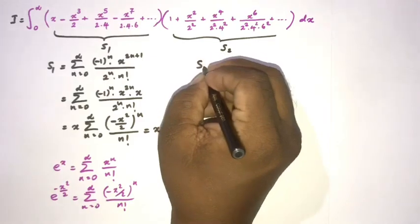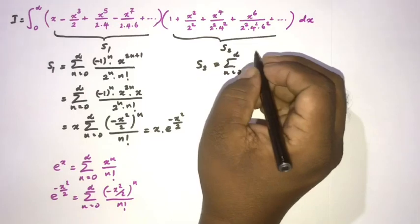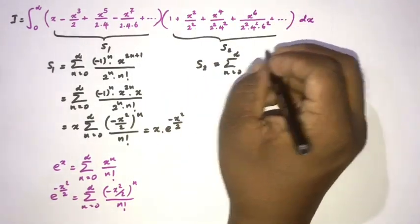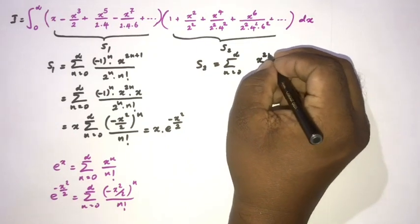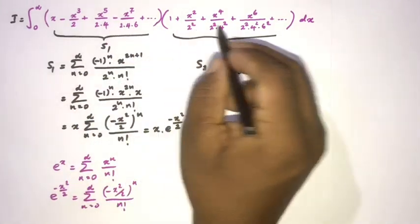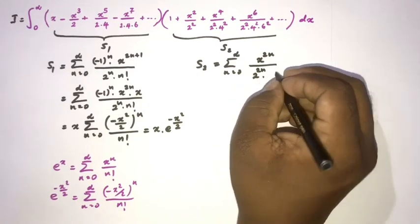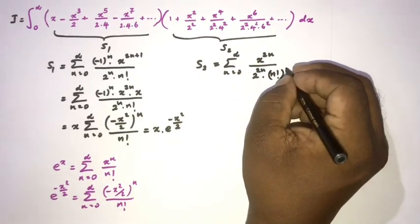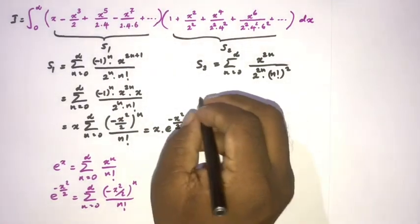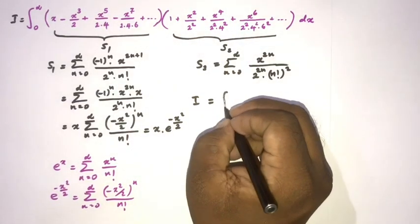Now let's move to S2. We represent S2 as the sum from n=0 to infinity of x^(2n), since we have x², x⁴, x⁶, and in the denominator we have 2², 4², ... which gives us 2^(2n) times (n!)².